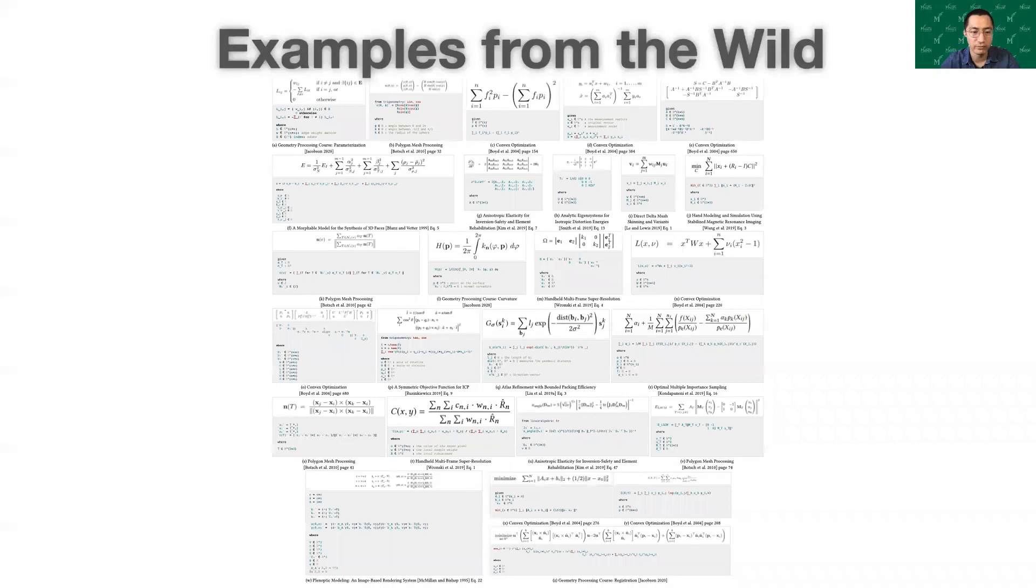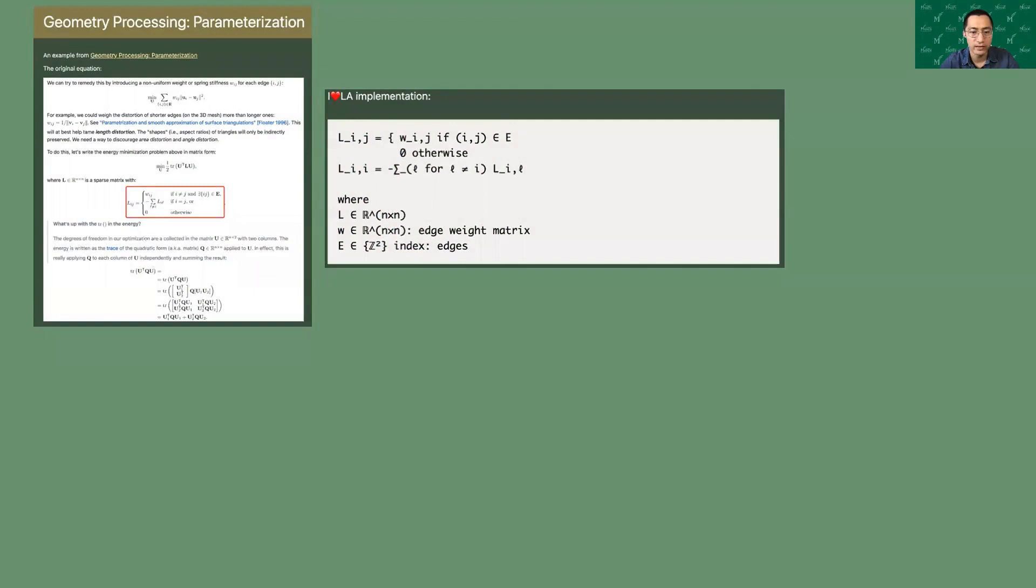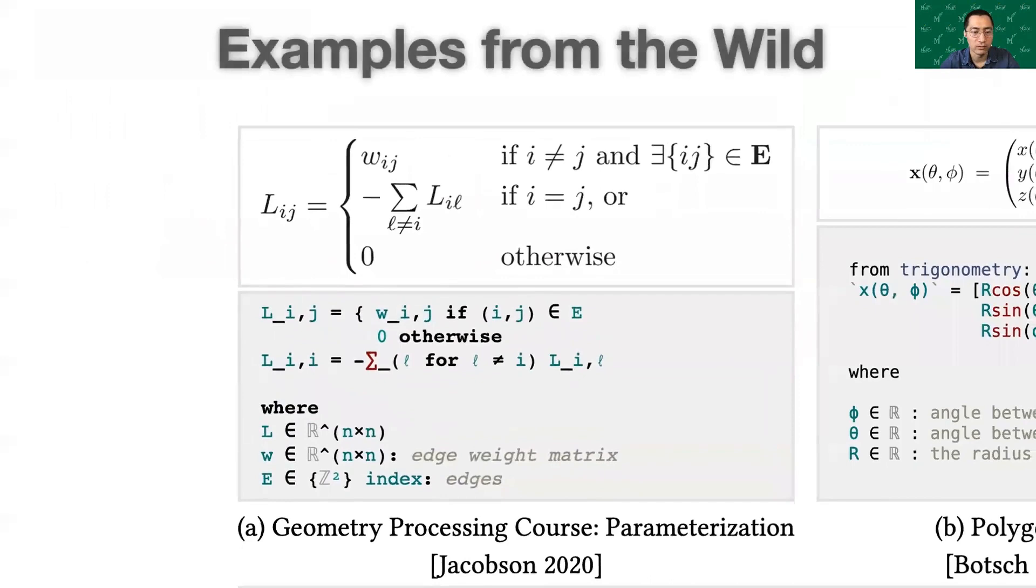We evaluated I❤LA on a variety of examples, from different papers, books, and online courses. For each example, we showed the original formula, I❤LA implementation, output code for Eigen, NumPy, MATLAB, LaTeX, and the rendered LaTeX output. We did the same evaluation on all the examples here.